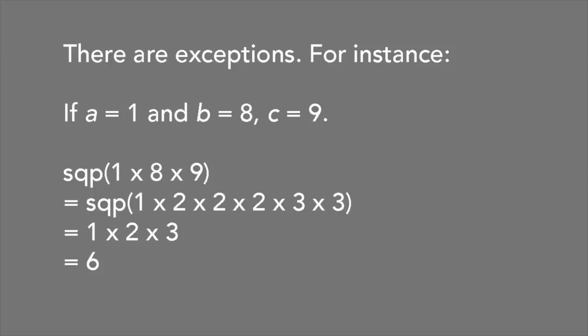Which is the square-free part of 1 times 2 times 2 times 2 times 3 times 3, which equals 1 times 2 times 3, or 6. And in this case, SQP of ABC over C equals 6 over 9, or 2 over 3.